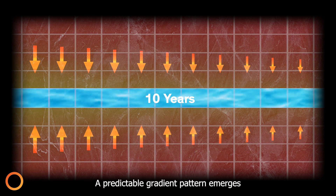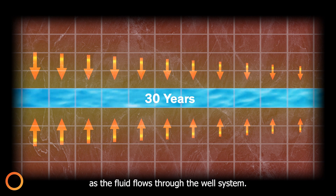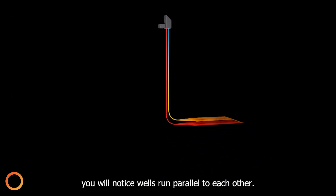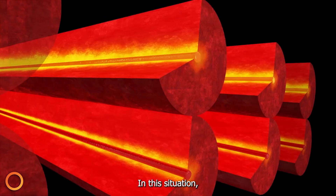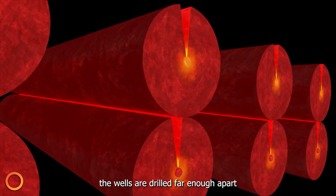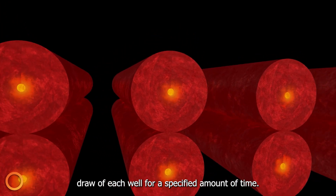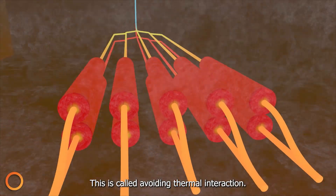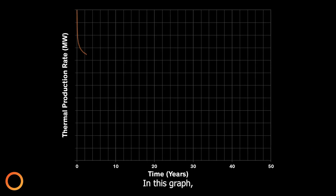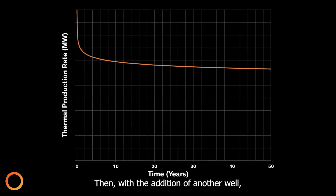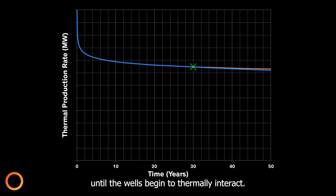A predictable gradient pattern emerges as the fluid flows through the well system. In an Everloop, you will notice wells run parallel to each other. The wells are drilled far enough apart so as to not significantly affect the heat draw of each well for a specified amount of time — this is called avoiding thermal interaction. In this graph, we can see the modelling of a single well's heat production over time. Then, with the addition of another well, the production will follow the original line exactly until the wells begin to thermally interact.